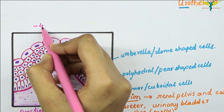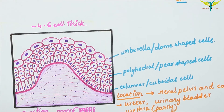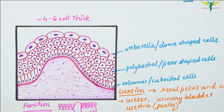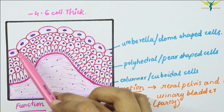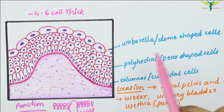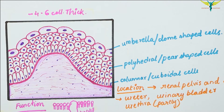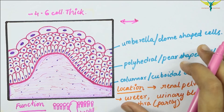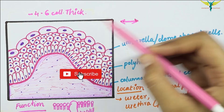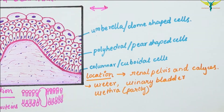For revision: the transitional epithelium is a multi-layered epithelium four to six cells thick, also called urothelium. The deepest cells are columnar or cuboidal, the medial layer cells are polyhedral or pear-shaped, and the top surface cells are umbrella or dome-shaped. It can be stretched considerably without losing integrity, becoming flattened when distended.